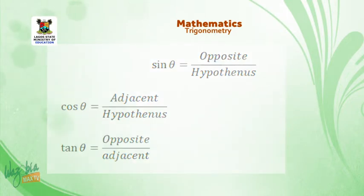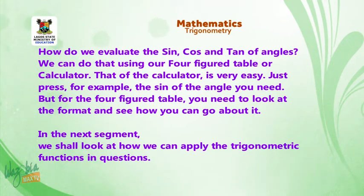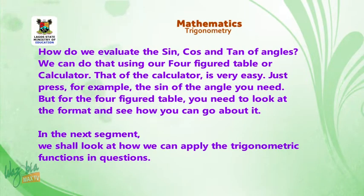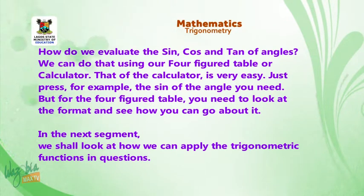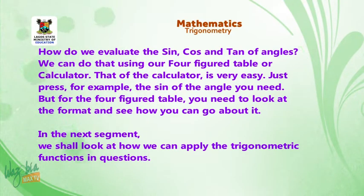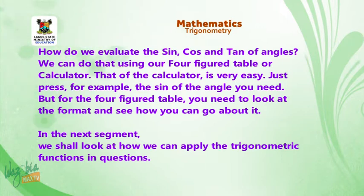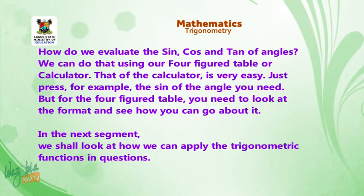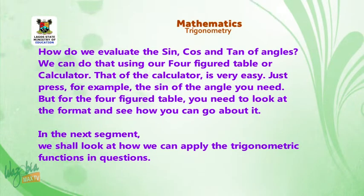To evaluate sine, cosine, and tangent of an angle, we can use a four-figure table or a calculator. With a calculator, simply press the sine or cosine button. For a four-figure table, you look up the values — you can get the sine of angles from 0 to 89 degrees. In the next segment, we look at how to apply these trigonometric functions in solving problems.